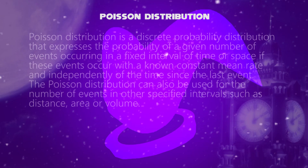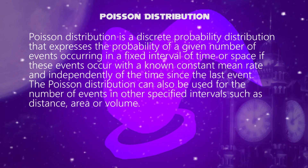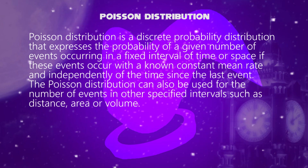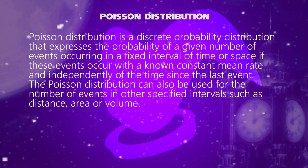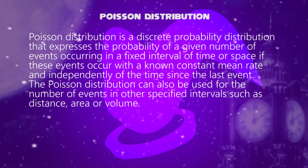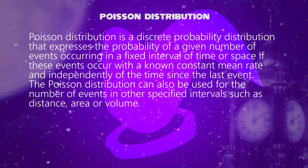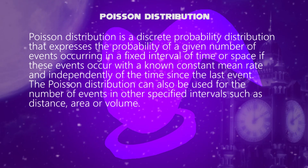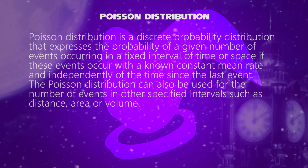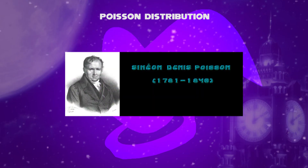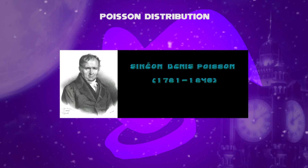Poisson Distribution is a discrete probability distribution that expresses the probability of a given number of events occurring in a fixed interval of time or space, if these events occur with a known constant mean rate and independently of the time since the last event. It can also be used for the number of events in other specified intervals such as distance, area, or volume. This comes from French mathematician Simeon Denis Poisson.